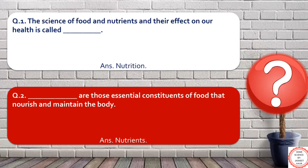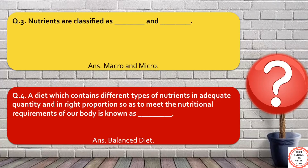Next question: those essential constituents of food that nourish and maintain the body are called nutrients. Nutrients are classified as macro and micronutrients. Macronutrients are those which are required by the body in large amounts, like carbohydrates, protein, and calcium. Whereas micronutrients are those which are essential and required by the human body in lesser amounts, like vitamins, iron, and iodine.